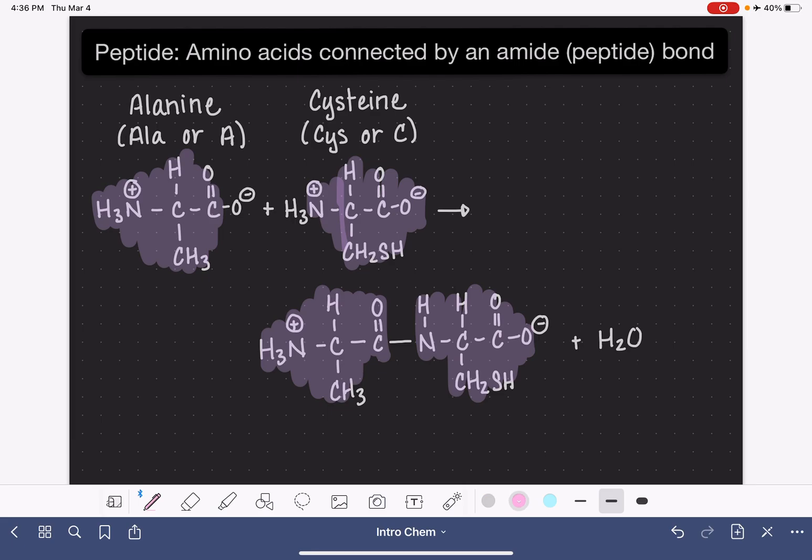This point of connection between these two amino acids is what we call the amide bond. It is the amide functional group, also called a peptide bond.